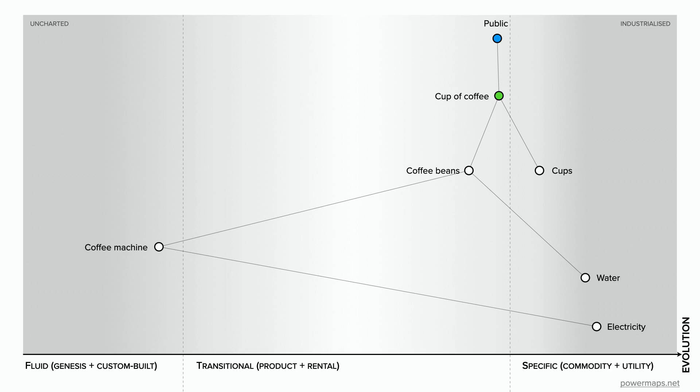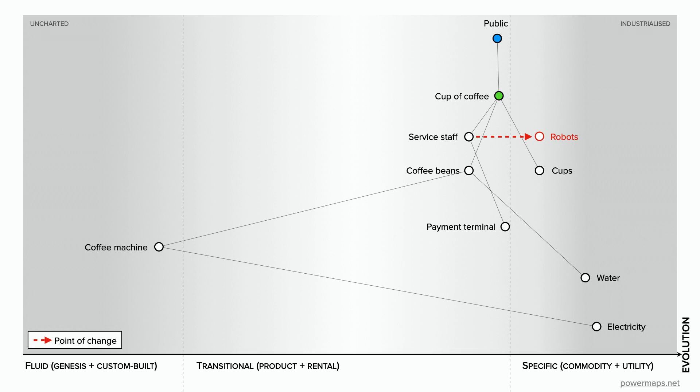Therefore, we're interested in having a map that's useful. And this one is, because we can show it to others who can point out what we've missed — like staff to serve customers or some kind of payment terminal. And they may even start to challenge the assumptions underlying our business or the industry itself, such as: do we even need staff? Couldn't we invest in robot service instead? It's exactly these types of conversations we're looking to stimulate, because it's from discussions such as these that new innovative ideas emerge.